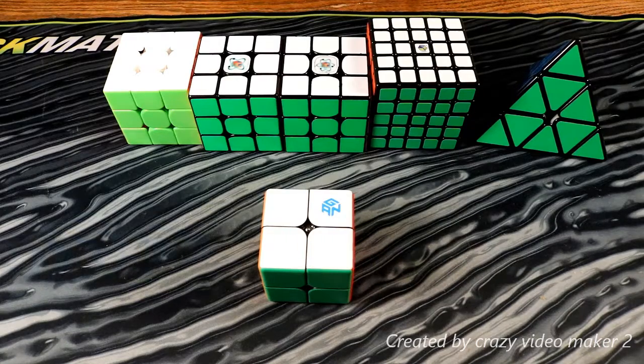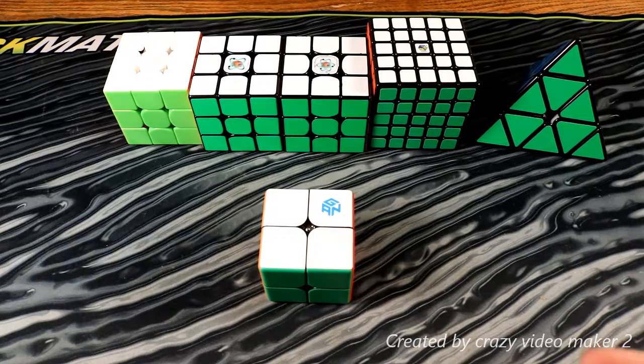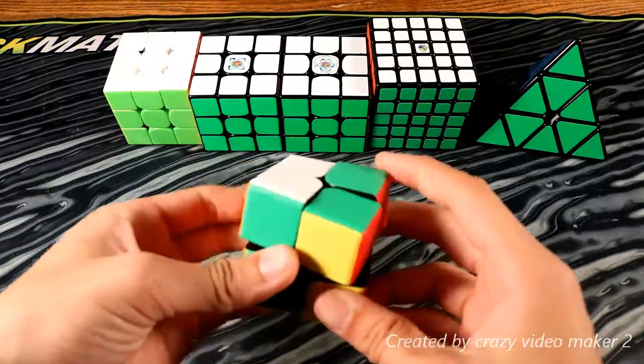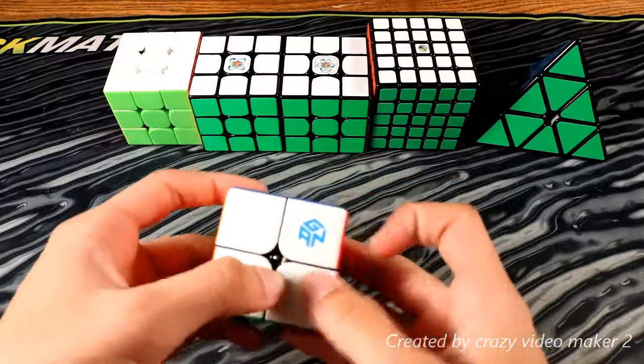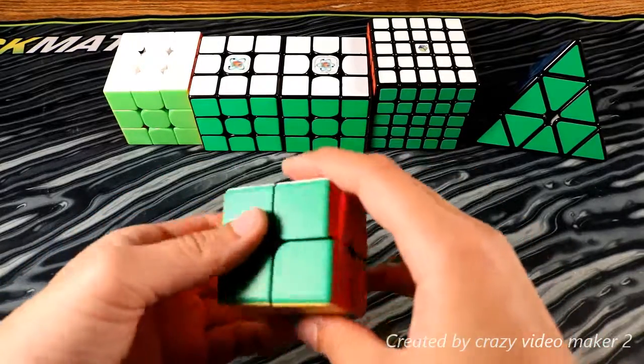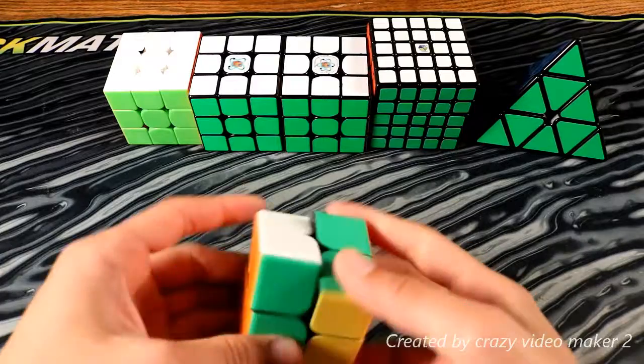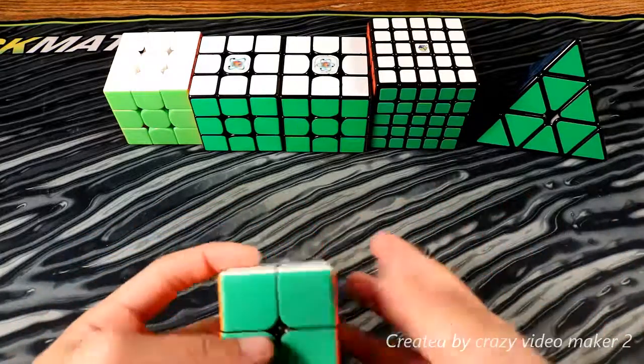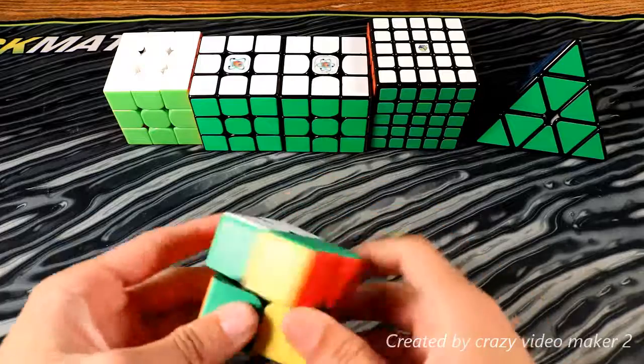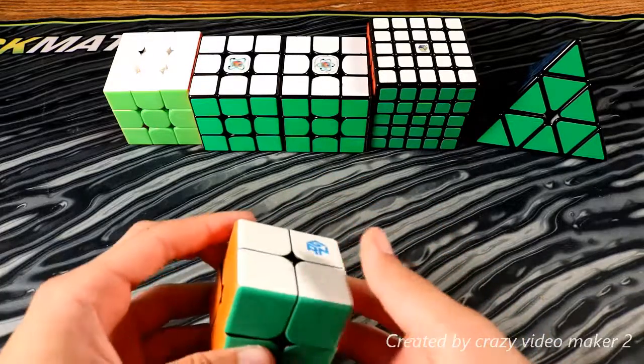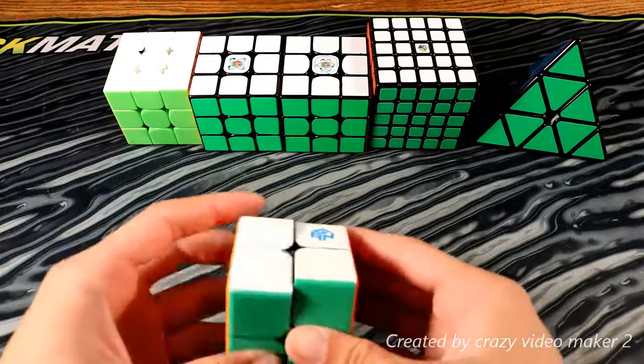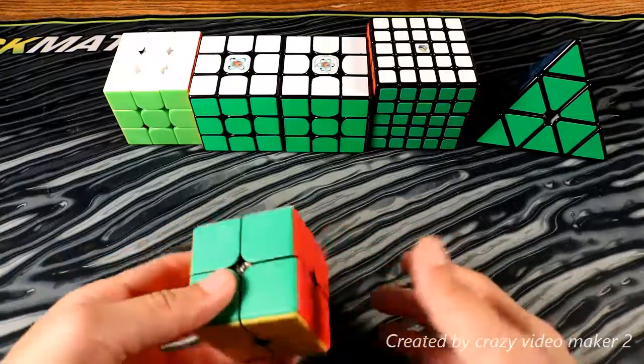Lastly we have 2x2. As you can tell, it's the new GAN 249 2x2. I did do an unboxing, but I haven't uploaded that yet.